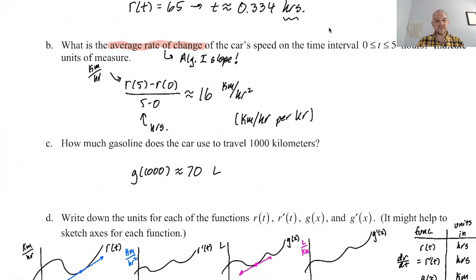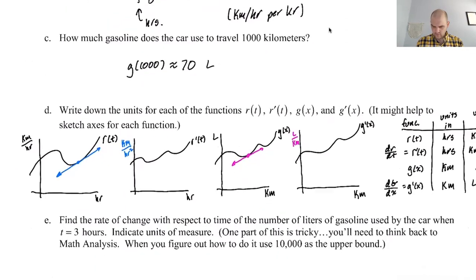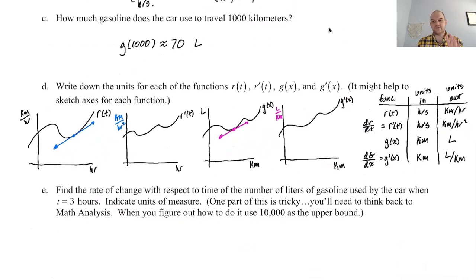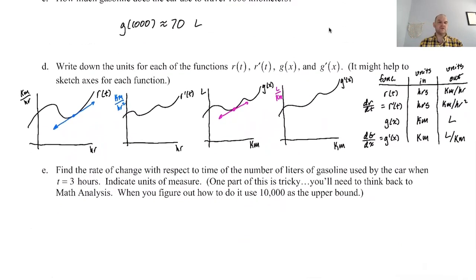We looked at how much gas the car uses to travel a certain amount, and we found it was 70 liters. On this problem, we tried to go kind of in depth on what the units will be for a function, for its derivative. I suggest that the easiest way to figure out the units of the derivative is to actually sketch a tangent line to the original function and look at units over units. You can kind of work them out. Made a table to summarize it. I think that's going to help us on the next part.